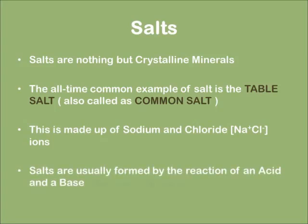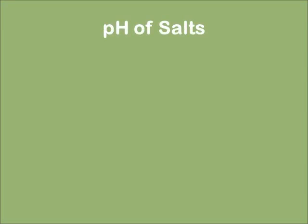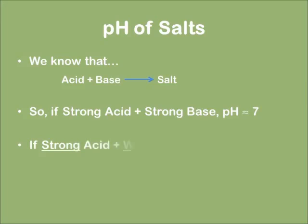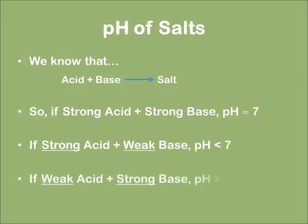Salt is usually formed by the reaction of acids and a base, as discussed in lecture number 1. Now let's learn about the pH of a salt. We already know that any acid and base on reaction will give rise to a salt. When we have a combination of a strong acid and a strong base, the pH will be around 7. If we take a strong acid and a weak base, the pH will be less than 7. If we have a weak acid and a strong base, the pH will obviously be greater than 7.